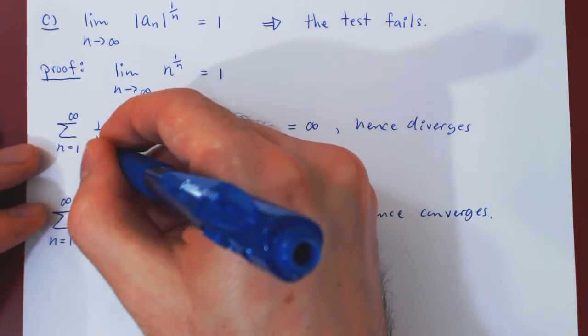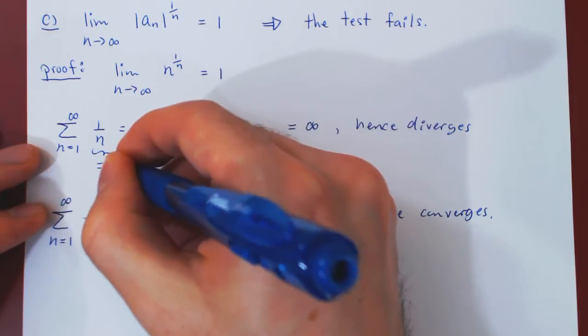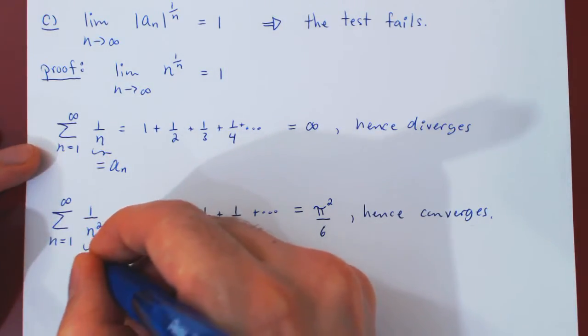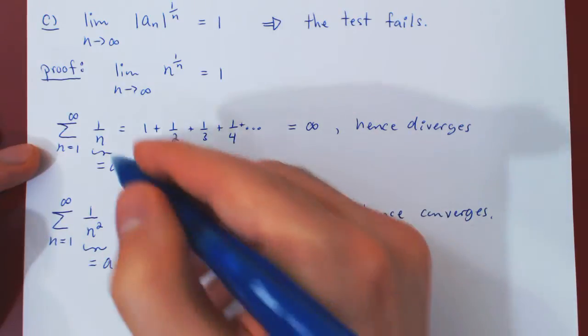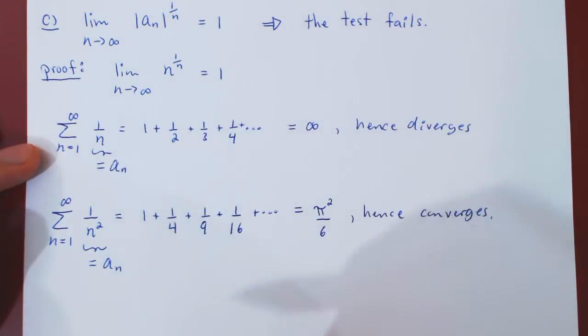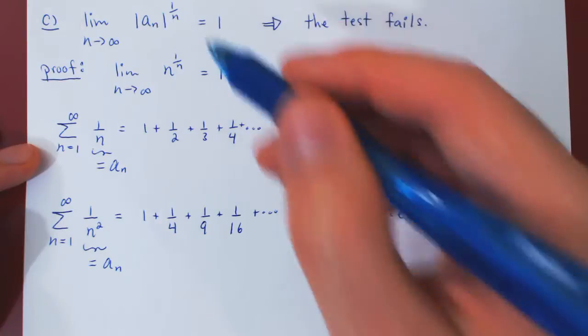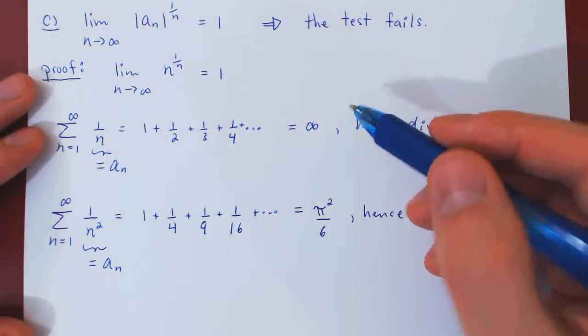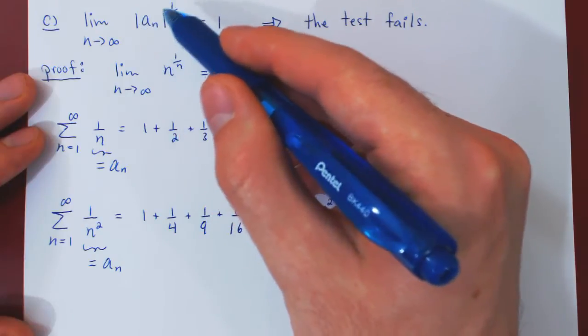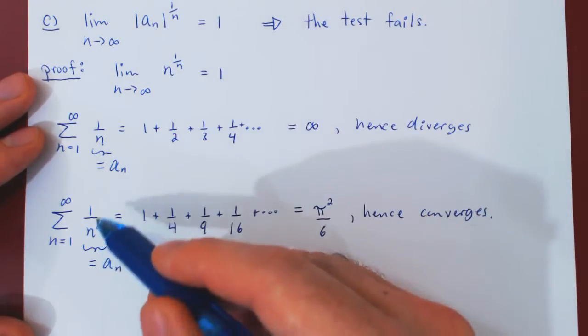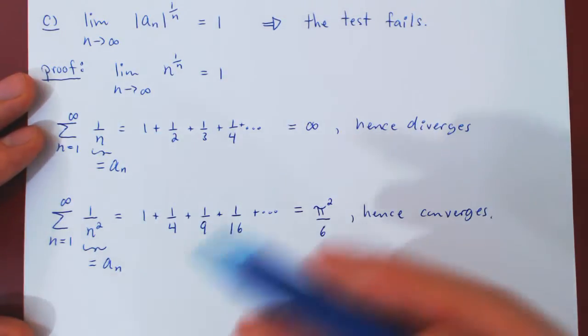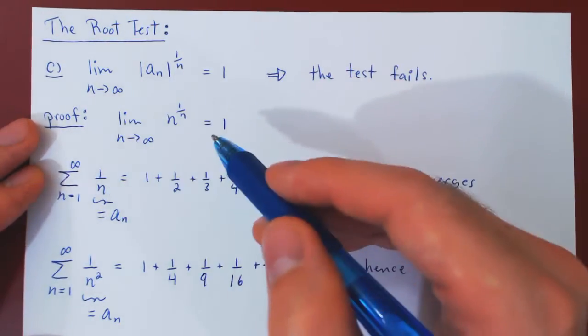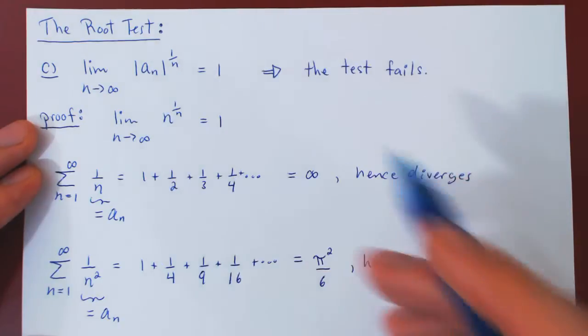So, in the first case, a_n is 1 over n. In the second case, a_n is 1 over n squared. So we'll evaluate both limits separately and arrive at an answer of 1. One thing that is clear is we can omit the absolute value as the terms are already positive.